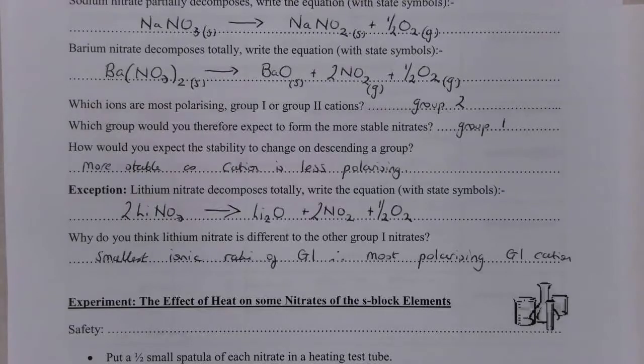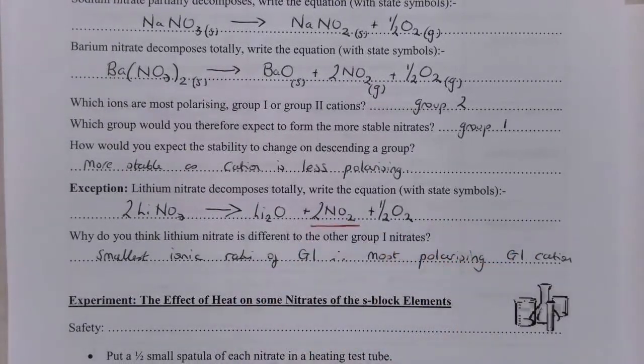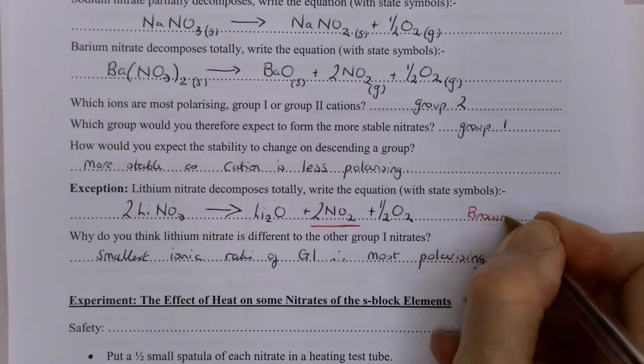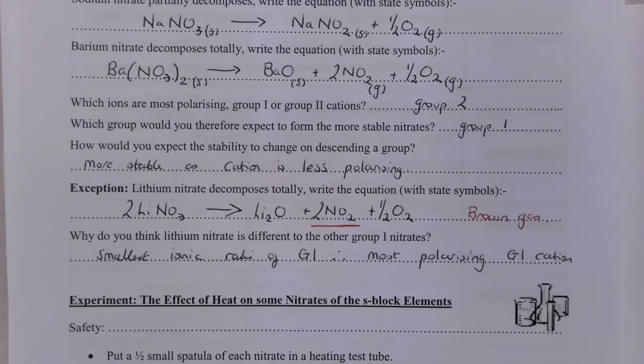So you're going to carry out this experiment in a class in a similar way to the one you did with the carbonates. There is however a new safety precaution and it's related to this nitrogen dioxide gas. This nitrogen dioxide is a brown gas. Now one thing you need to know about coloured gases. All coloured gases are poisonous.